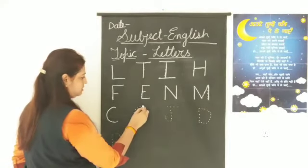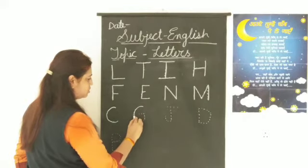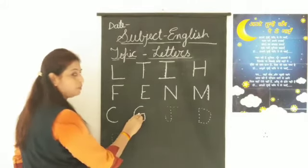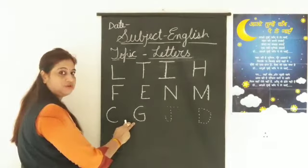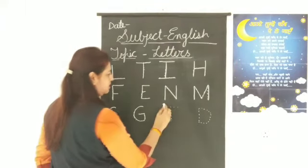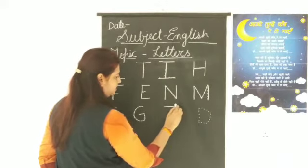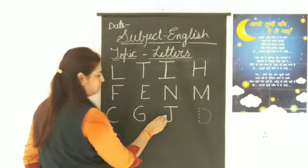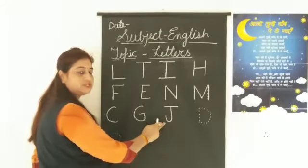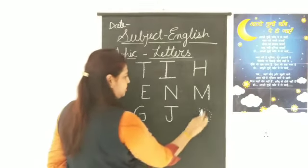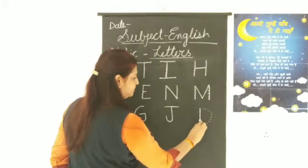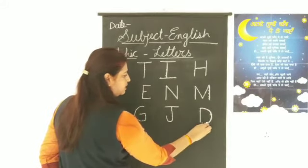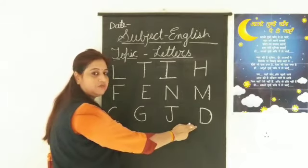G. Curve, right on doors, slanting line to inverse. This is G. G for grapes. J. Slanting line, standing line, then turn to upwards. This is J. J for jug. D. Standing line, curve. This is D. D for dog.